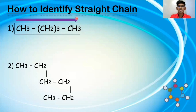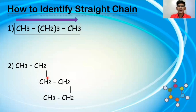Let us see one more question related to the straight carbon chain. Here we have CH3–CH2–CH2–CH2–CH2–CH2–CH2–CH3. Many people think this is a branched chain because it appears to go around, but it is not — it is a straight chain. Let us count the carbons: 1, 2, 3, 4, 5, 6. Now let us count the terminal points: one and two. If there are only two terminal points, it is a straight chain.